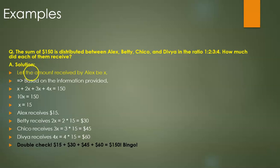So we start with assuming that the amount received by Alex be x. If Alex received x, and based on what we've been provided, the ratio that he received was 1, then Betty, if she received two times as much as Alex, should have received 2x.